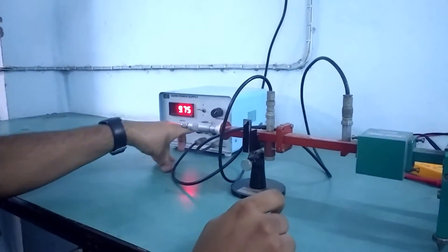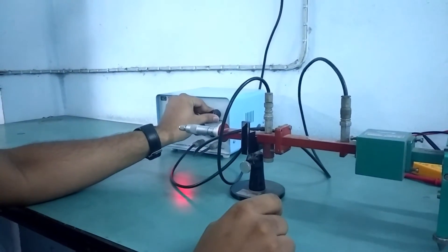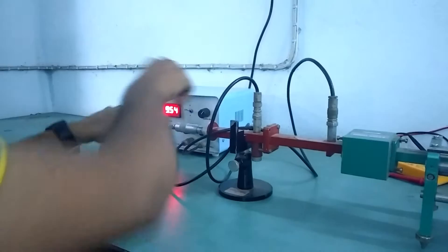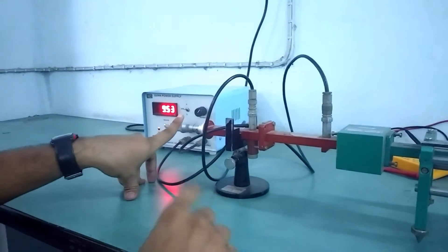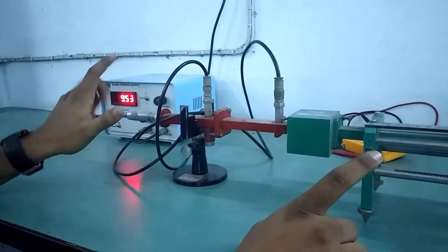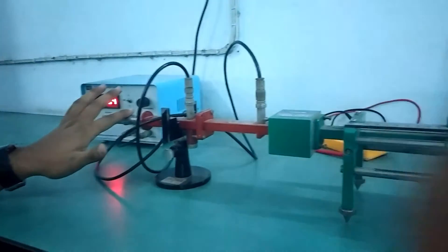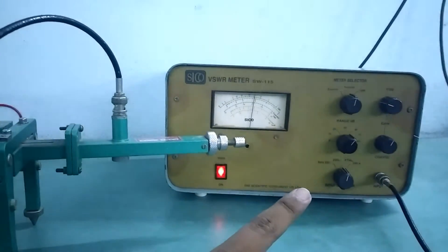And in this part, we will fix the Gunn bias voltage at 9.5 volts. And in this, we have to fix a particular frequency and obtain the output power at the VSWR meter.